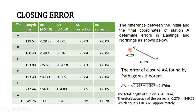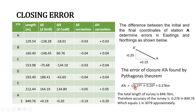We can determine the closing error. The closing error is the distance between A-dash and A — in other words, the distance A-dash A. This error can be found using the Pythagorean theorem. As you would see in the formula, A-dash A equals the square root of (0.19 squared plus 0.20 squared), and this gives us 0.276 meters.